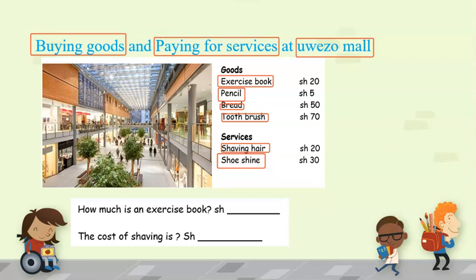Whenever you are sent to the shop, the first thing you should ask the shopkeeper is how much the item costs. At Weather Mall, an exercise book costs 20 Kenya shillings, a pencil costs 5 Kenya shillings, bread costs 50 Kenya shillings, a toothbrush costs 70 Kenya shillings, a haircut costs 20 Kenya shillings, and shoe shining costs 30 Kenya shillings.